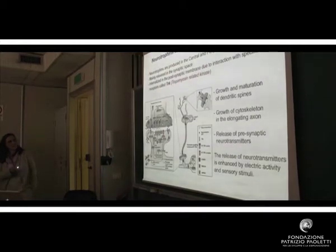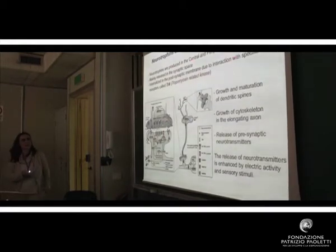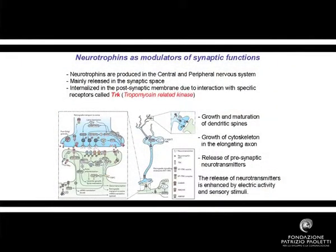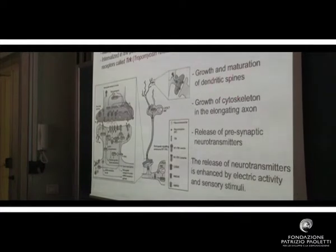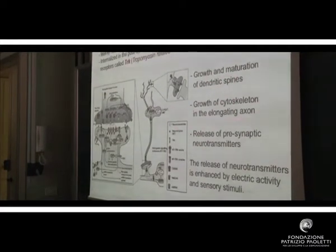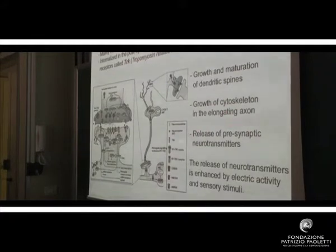Don't be afraid of looking at this picture because it's quite complex. All I want to say is that neurotrophins are produced in the central and peripheral nervous system, mainly released in the synaptic space, and they are internalized in the postsynaptic membrane after interaction with specific receptors called tropomyosin-related kinases. This interaction triggers a number of complex biochemical pathways that eventually lead to growth and maturation of the dendritic spines, growth of cytoskeleton in the elongating axon, and release of presynaptic neurotransmitters.